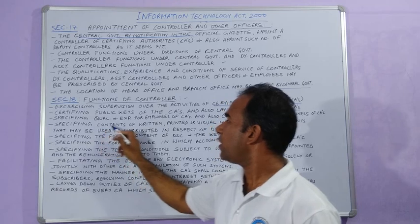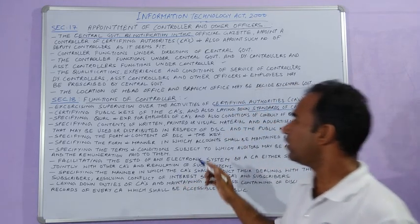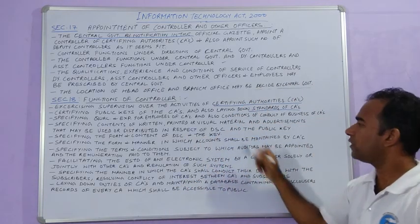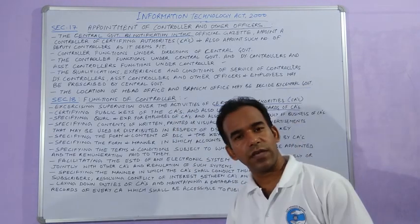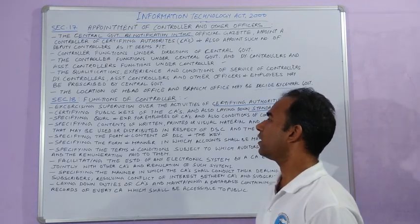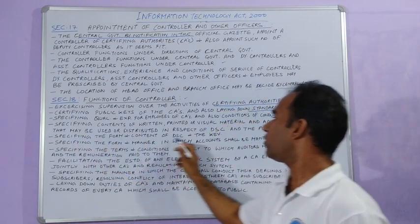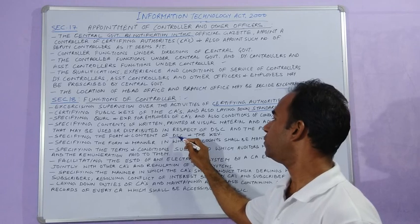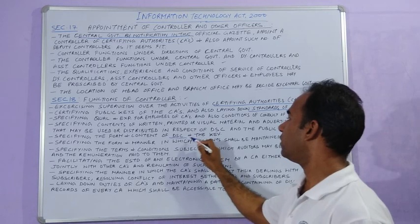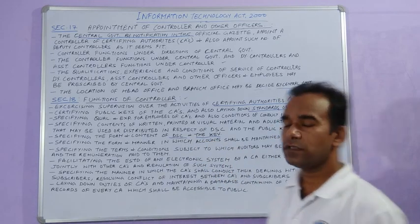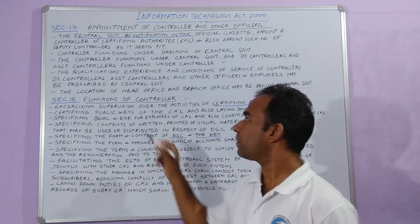The controller is responsible for specifying the contents of written, printed or visual material and advertisements that may be used or distributed in respect of digital signature certificates and the public key. The controller also specifies the form and content of digital signature certificates.